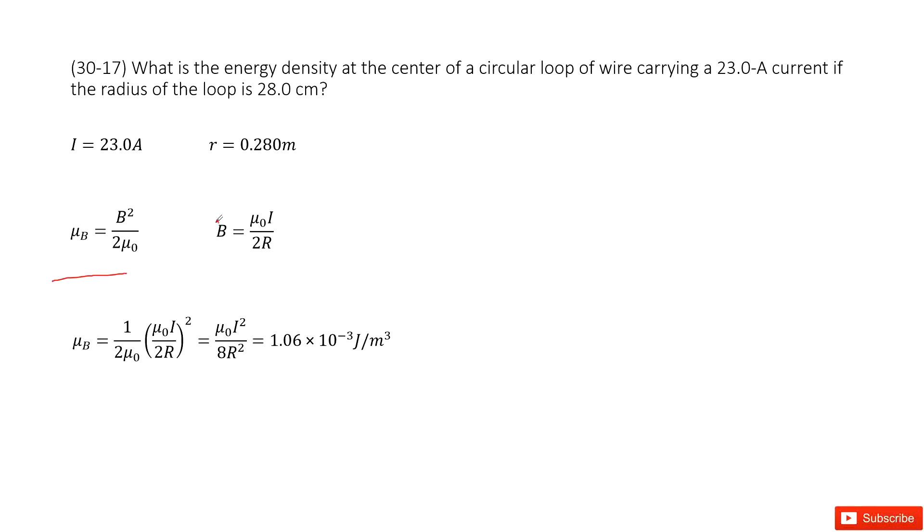Now you can see, you input B into this first equation. Now you get the function for μ_B, that is the magnetic energy density, right? Then input all the given quantities, we get the answer. Thank you.